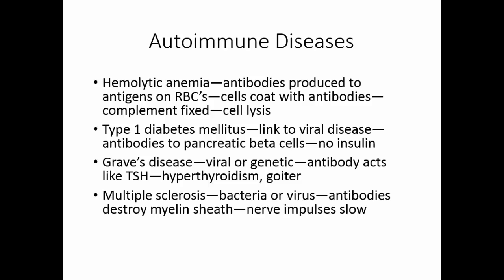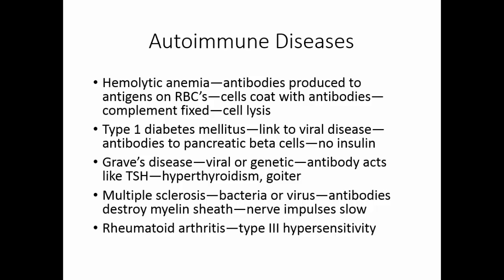Multiple sclerosis is an autoimmune disease of the nervous system. Again, there is a bacterial or viral link that has been found in some cases. The antibodies produced destroy the myelin sheath. As a result, nerve impulses slow and over the course of time muscle atrophies so that these people become unable to move. And rheumatoid arthritis, already discussed as a type 3 hypersensitivity, is still an autoimmune disease because we don't know what triggers the production of the IgM or IgG antibody involved in causing it.